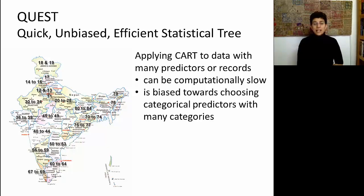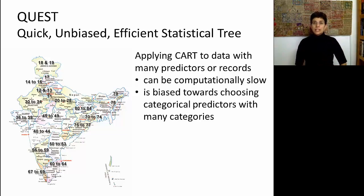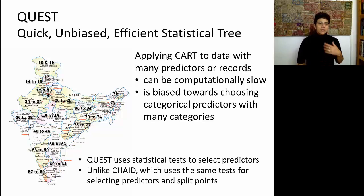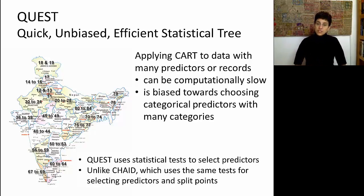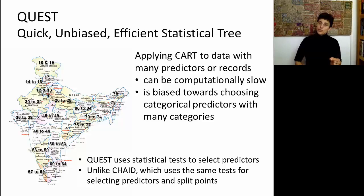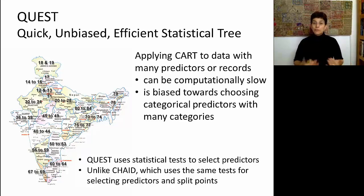A solution has been suggested by researchers who created a tree called Quest — Quick, Unbiased, Efficient Statistical Tree. The idea is to address the computational issues with ordinary CART, but also to avoid bias towards categorical predictors with many categories. Quest uses statistical tests to select predictors — similar to CHAID, which also uses statistical tests — but unlike CHAID, Quest has separate tests for selecting predictors and selecting split points. That's how it avoids the problem of favoring predictors with many categories.